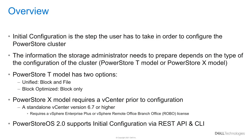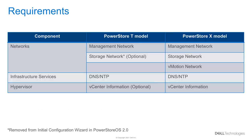Starting in PowerStore OS 2.0, the initial configuration is also supported via REST API and CLI. This table shows the required information that an administrator needs to complete the initial configuration wizard for PowerStore T and PowerStore X model appliances. Note that starting in PowerStore OS 2.0, the storage network has been removed entirely from the initial configuration wizard for PowerStore T. The PowerStore T model appliance can be configured with only the management network, and the storage network is configured at a later time if needed.